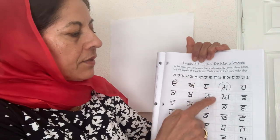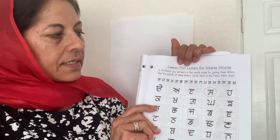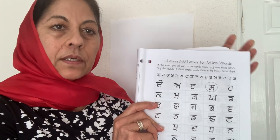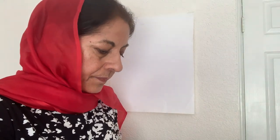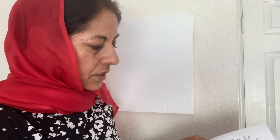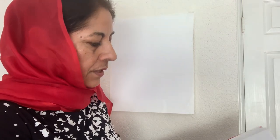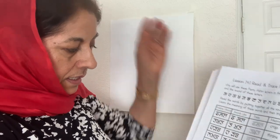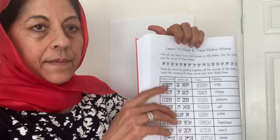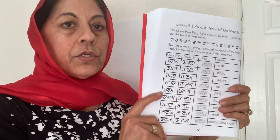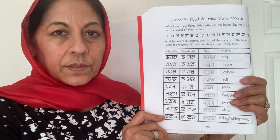Pause the video and go ahead and circle these letters. Those are the letters we'll be working on in this lesson. Now we turn the page, and we are only going to work on nine or ten words. That means you should be able to master these words — know them, how to read them, how to say them, and what they mean.